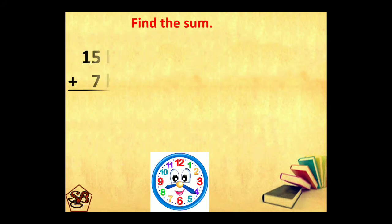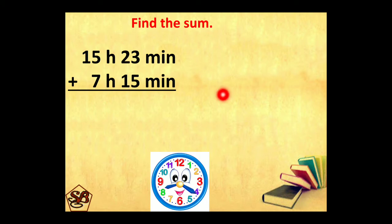Let's take an example. We have to find the sum of 15 hours 23 minutes plus 7 hours 15 minutes. As I said, the first step is we will add the smaller units, then we will add the bigger units. Adding them, 3 plus 5 will give us 8, 2 plus 1 will give us 3, 5 plus 7 is 12, 1 carry, 1 plus 1 is 2. So the answer will be 22 hours 38 minutes.